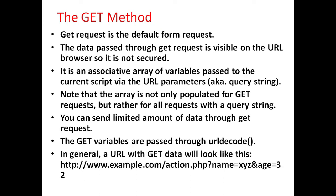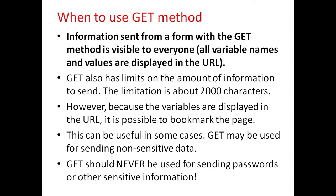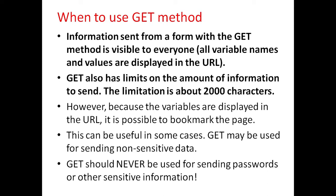In general, a URL with GET data will look like this: first HTTP, then the website name, the filename that is action.php, and name and age are the parameters whose values are displayed using the GET method. The information sent from a form with the GET method is visible to everyone — that is, all variable names and values are displayed in the URL. GET also has limits on the amount of information to send; this limitation is about 2000 characters.